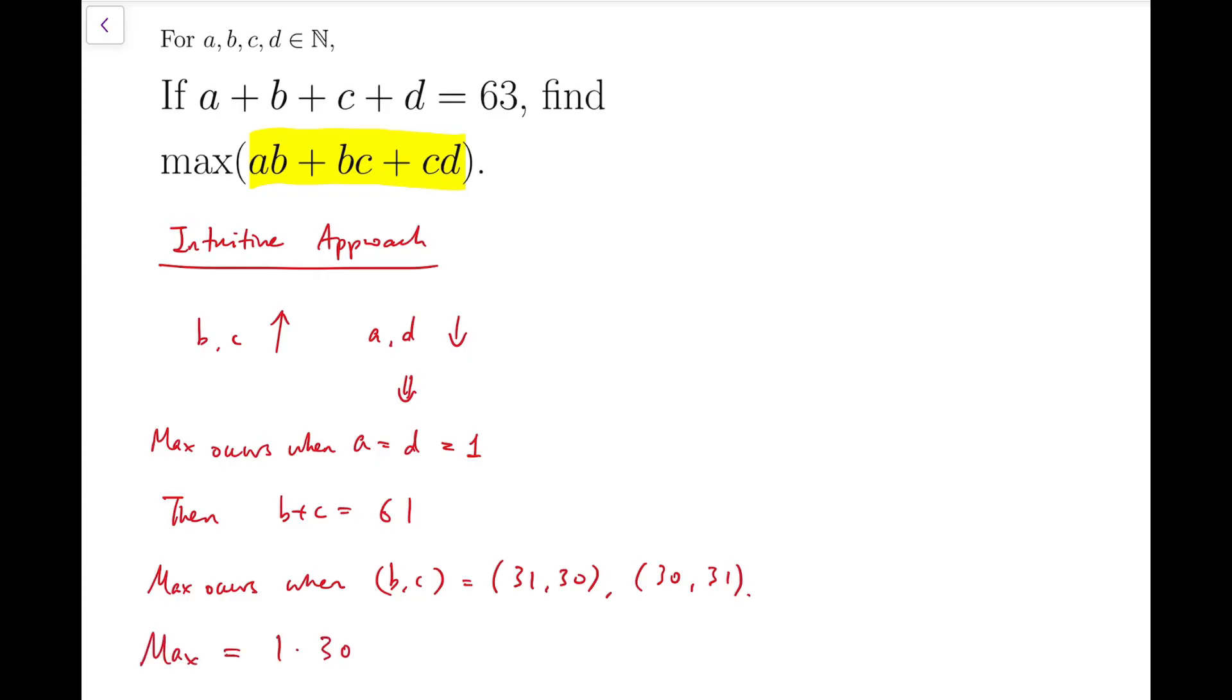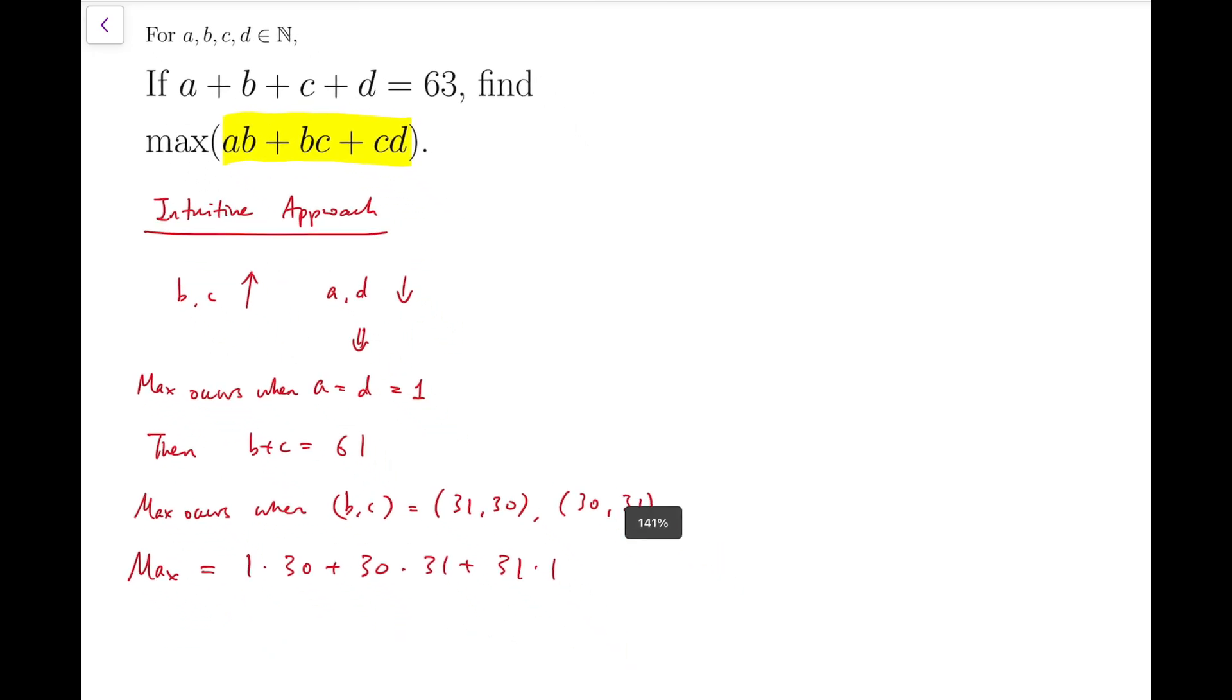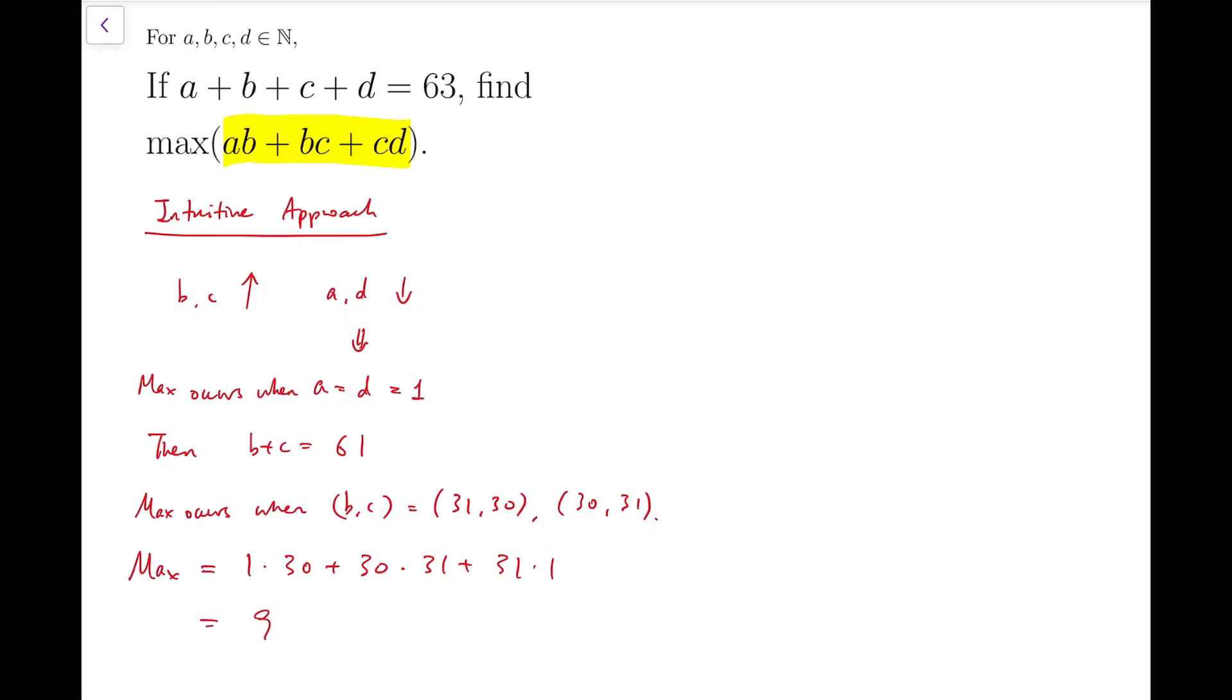So the maximum is equal to 1 times 30 plus 30 times 31 plus 31 times 1. That means it's equal to 991.